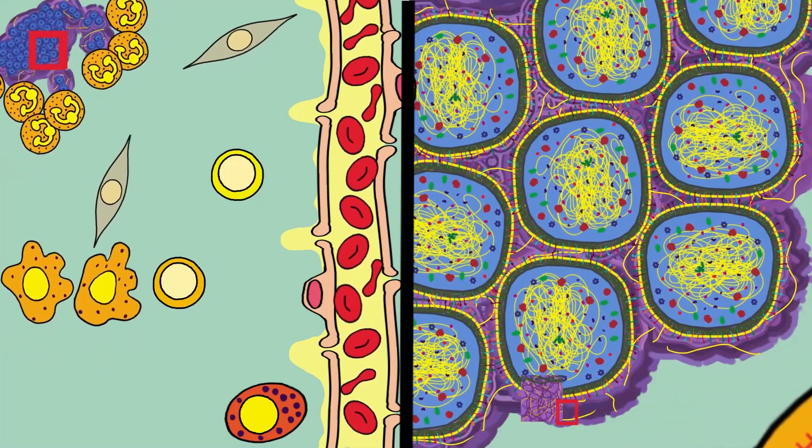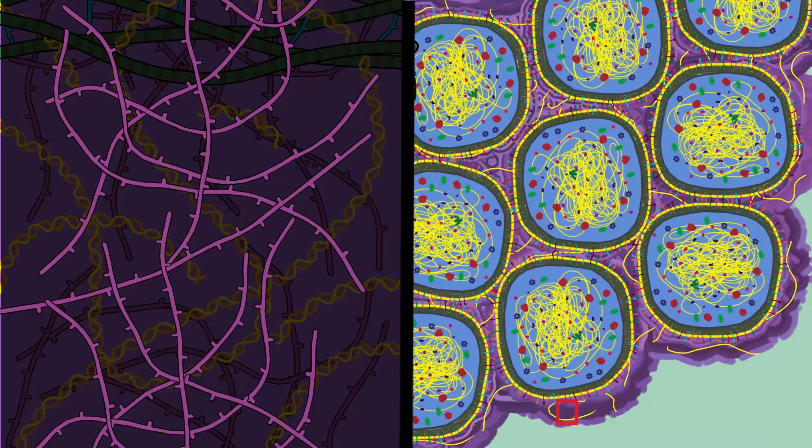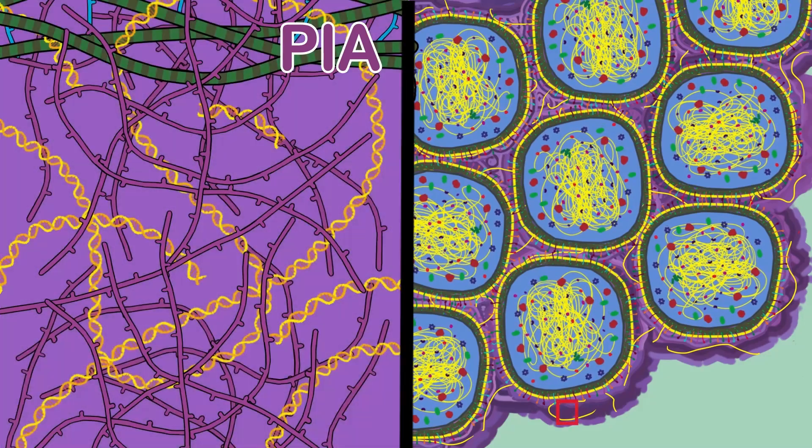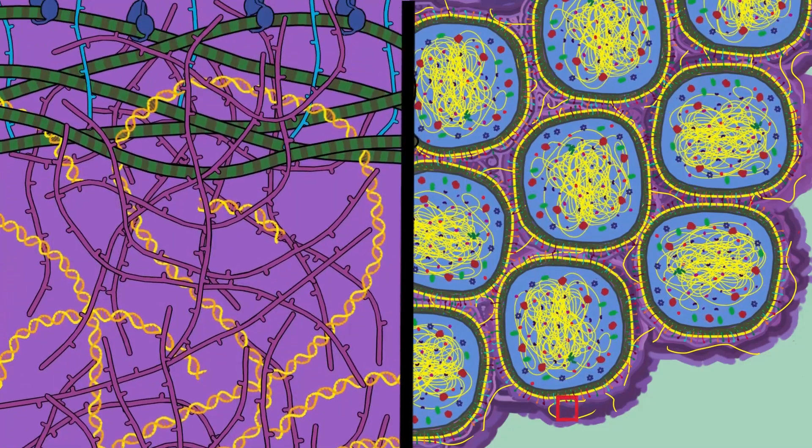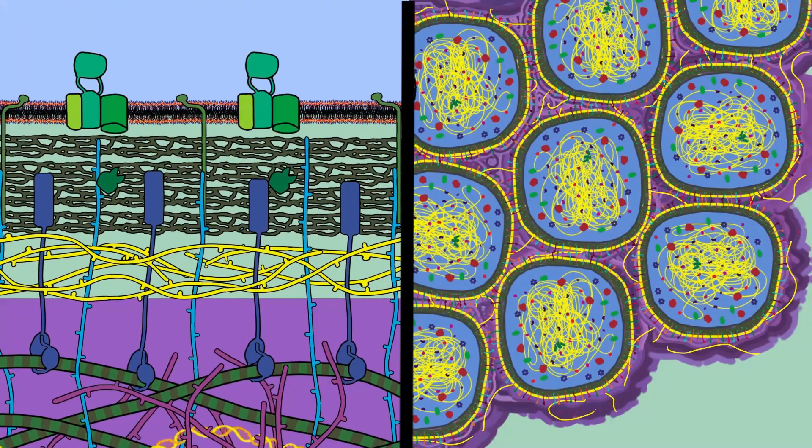The slimy substance called biofilm is mainly made from polysaccharide polymers that facilitate attachment, named polysaccharide intercellular adhesin or PIA. PIA polymers are synthesized, transported, and modified by a complex of four proteins.